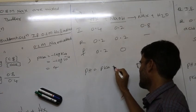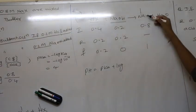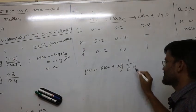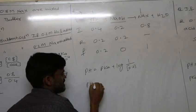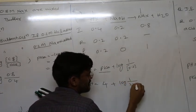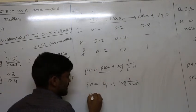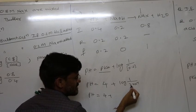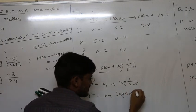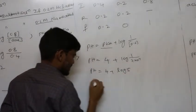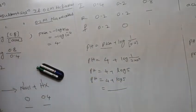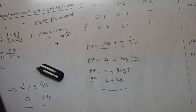pH = pKa + log(NAX / HX) = 4 + log(1.0 / 0.2) = 4 + log(5). Log 5 can be written as log(1/2 × 10) = log(5 × 10⁰). So pH = 4 + log 5. The value of log 5 ≈ 0.699, giving pH ≈ 4.699. These are the problems based on buffer solutions. Thank you.